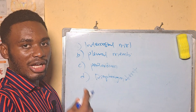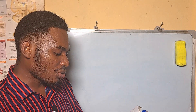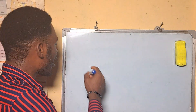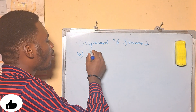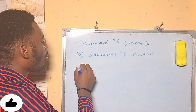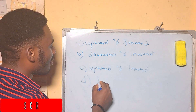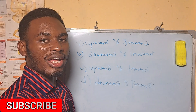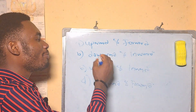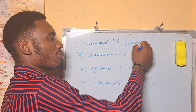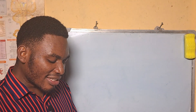When the intercostal muscles contract during inspiration, the ribs move — A: upward and forward, B: downward and inward, C: upward and inward, D: downward and forward. During inhalation the ribs move forward and upward, so our answer is A.